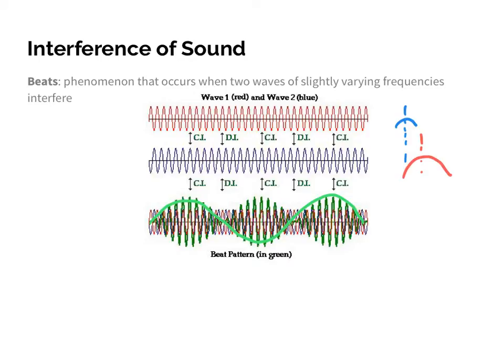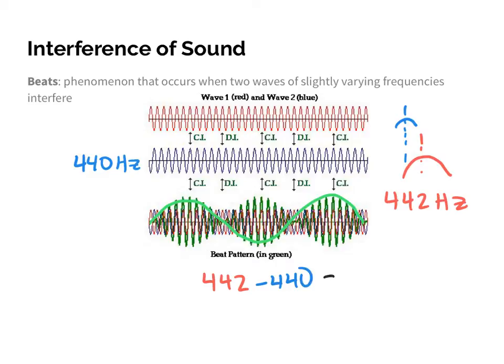I'm going to play 440 hertz and then 442 hertz. As you hear it, you'll notice the 'wah, wah, wah' — it goes loud and soft, loud and soft. That alternating between loud and soft is the beat pattern. It just so happens that the beat frequency is simply the difference: 442 minus 440 gives you a beat pattern of 2 hertz.